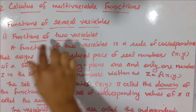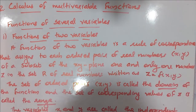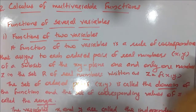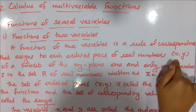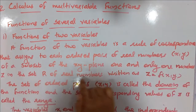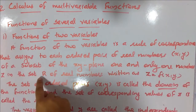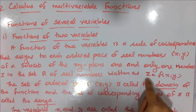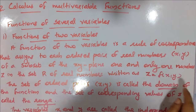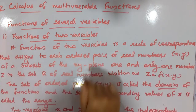Functions of Two Variables assigns one and only one number z in the set of real numbers, which is written as z equal to f of xy.